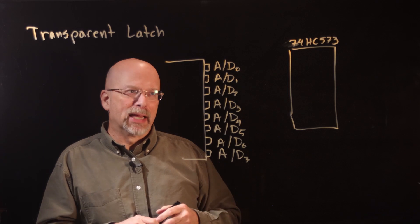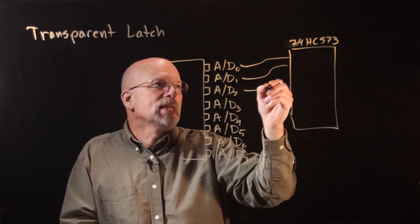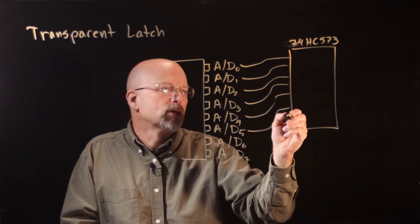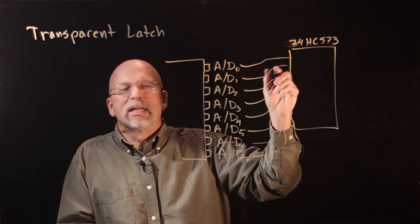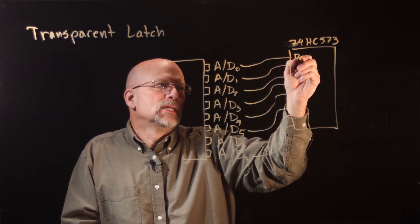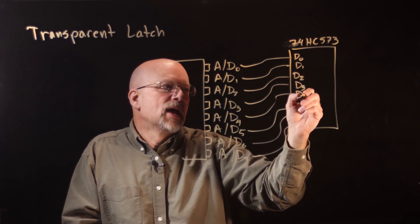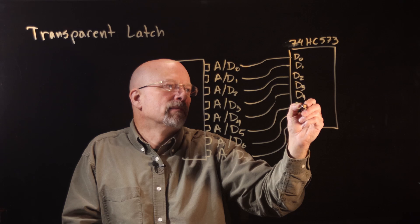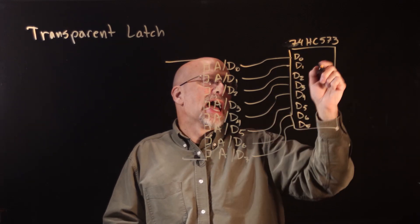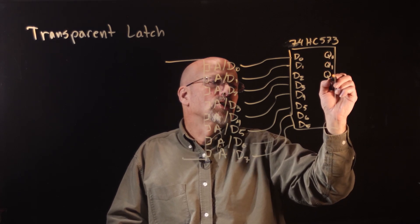Now all these wires went into the inputs on this transparent latch, and you know, whatever you wanted to label them, you could have labeled them D0, D1, and so forth, all the way down until you got to the last pin. And then on the other side of this latch you had all your Qs, so you had Q0 all the way down to Q7.